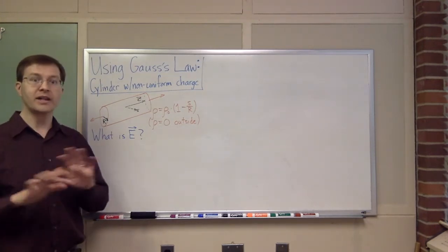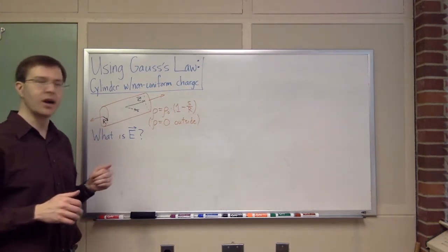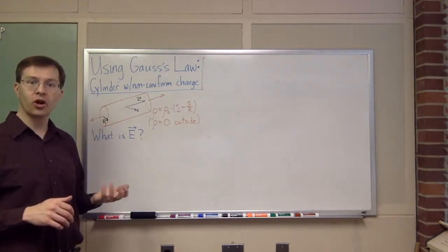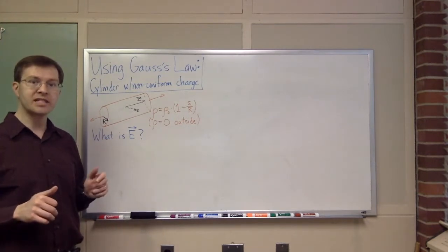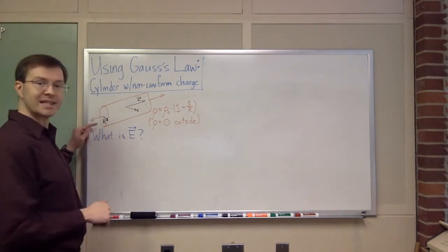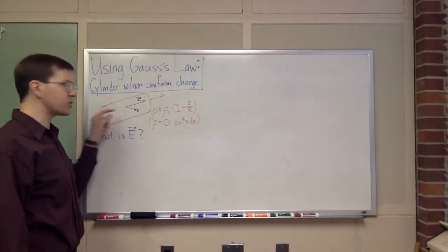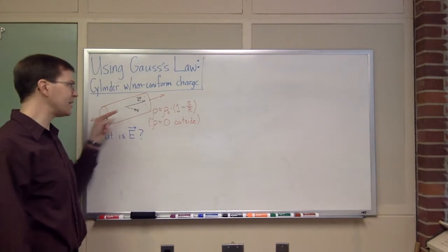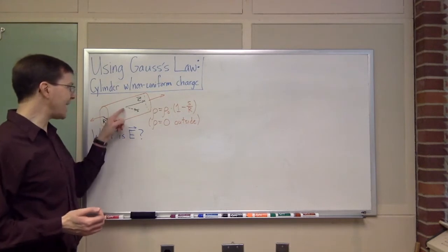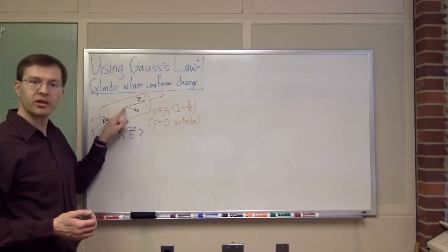I've talked elsewhere about those distributions, but let's look at a specific case here. I'm going to consider an infinite cylinder that has a non-uniform charge density through it, but with a nice symmetric pattern. I have this infinite cylinder of radius r stretched along in space, and I've chosen coordinates so the z-axis runs along the center of the cylinder. In cylindrical coordinates, I'm using little s to be the distance from the axis at any given point.